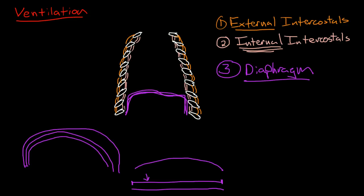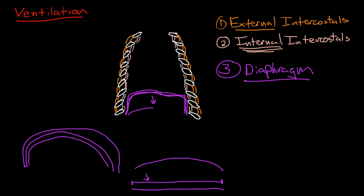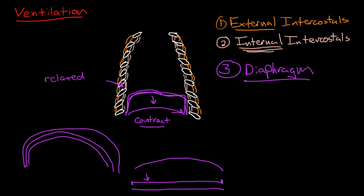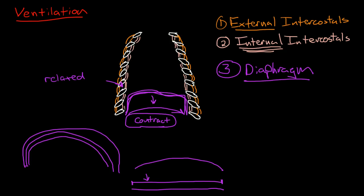When the diaphragm is relaxed, it is in this very steep dome shape. When the muscle fibers contract, then it flattens out and that's in its contracted form. So that's relaxed and that's contracted. When the diaphragm contracts, that is when we breathe in.